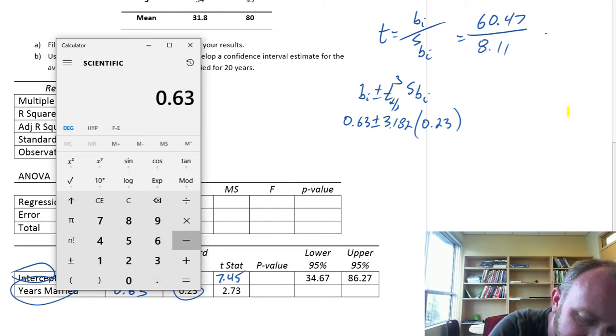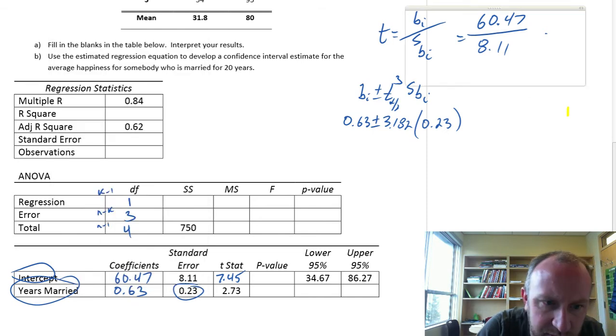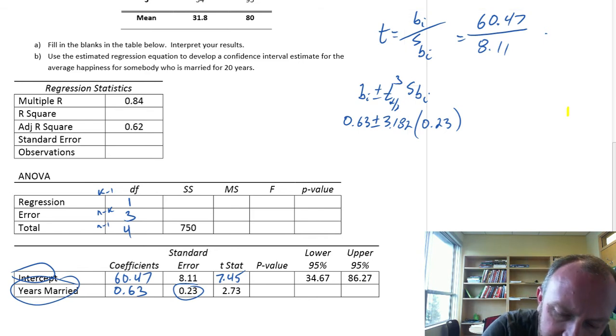0.63 minus 3.182 times 0.23. So that's minus 0.1. Let me just verify. Yeah, we're good. This is going to be minus 0.1. Just 0.10 is good.